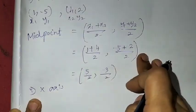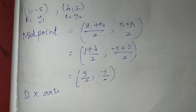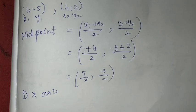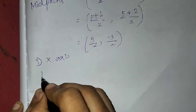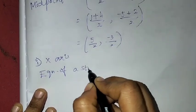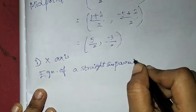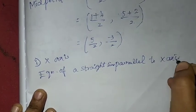Now we want to find the equation parallel to x-axis. The formula is y = b. If we want to find an equation of a straight line parallel to x-axis, it is nothing but y = b. That means we write y equal to whatever the y-coordinate value is. Let us take (5/2, -3/2) as (c, b). The equation of a straight line parallel to x-axis means y = y value, and parallel to y-axis means x = x value. Here, x value is 5/2 and y value is -3/2.